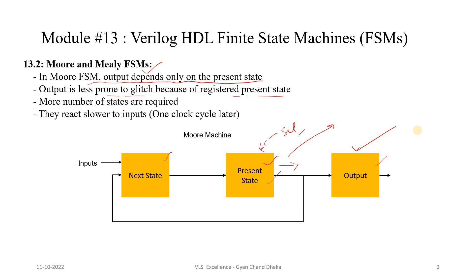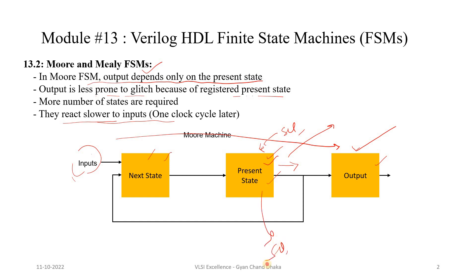Moore FSMs are slower or react slower to inputs. The input is not directly affecting the output; instead, the input affects the next state logic, which then affects the present state logic, and the present state output affects the output. Since the present state is a sequential circuit, it takes one clock cycle before producing a new present state, which then affects the output.